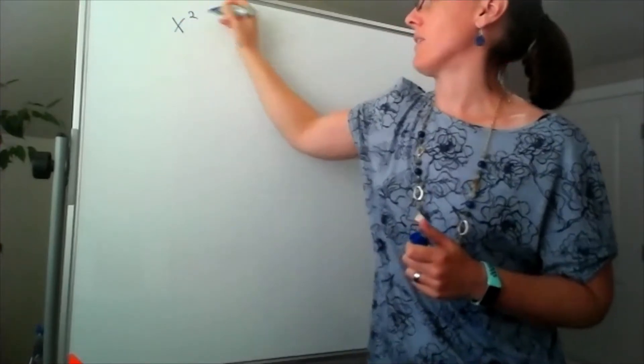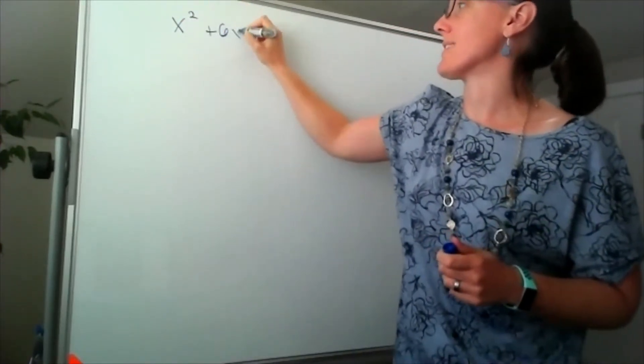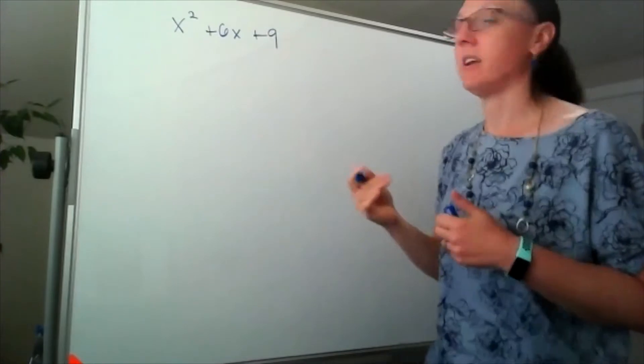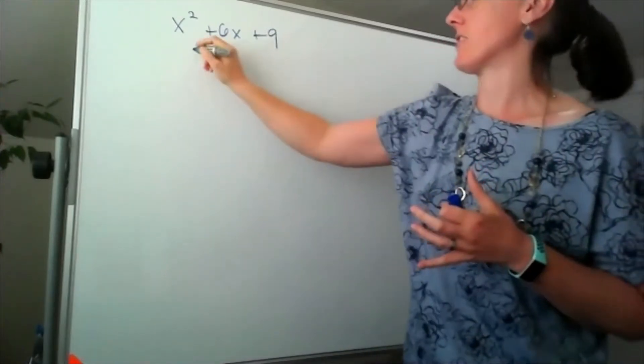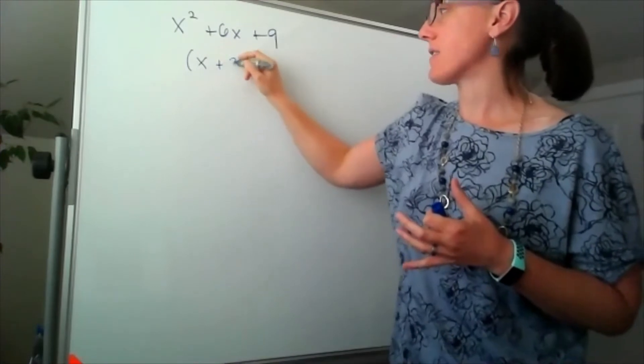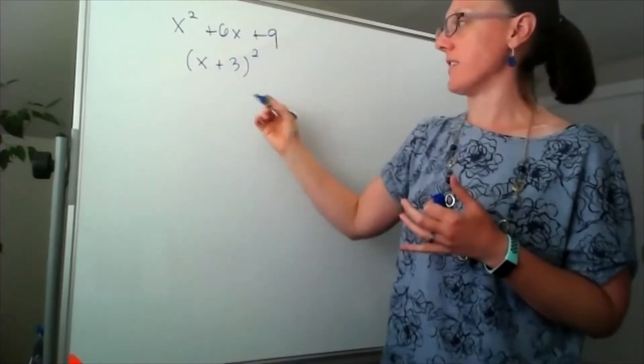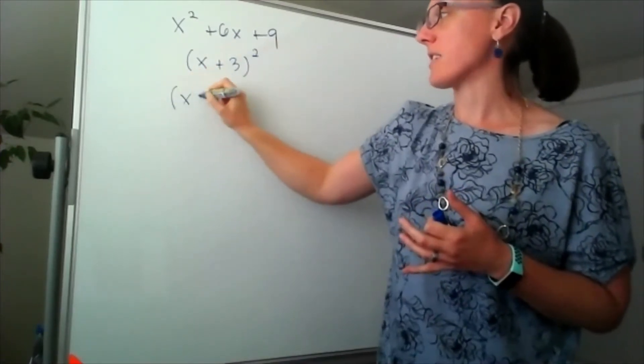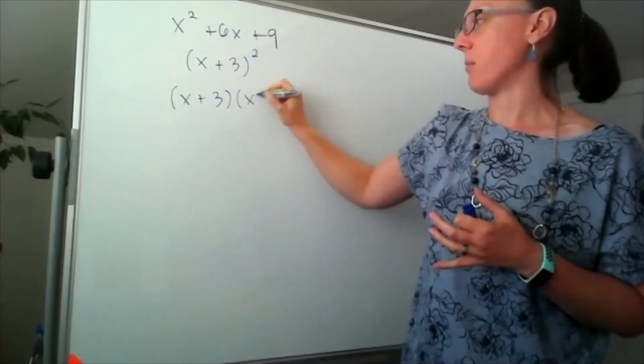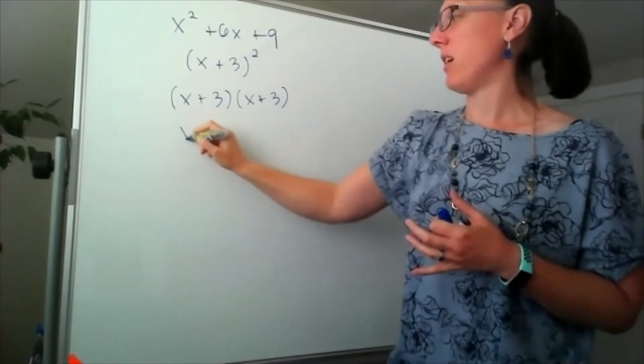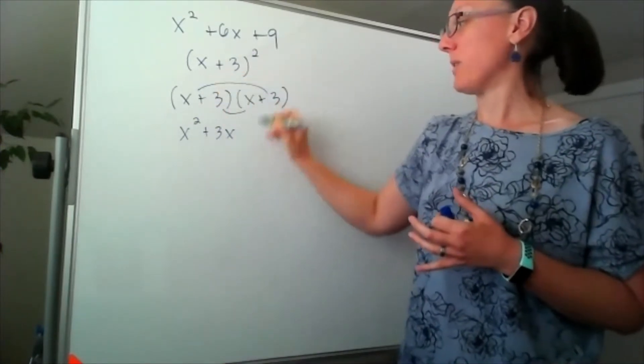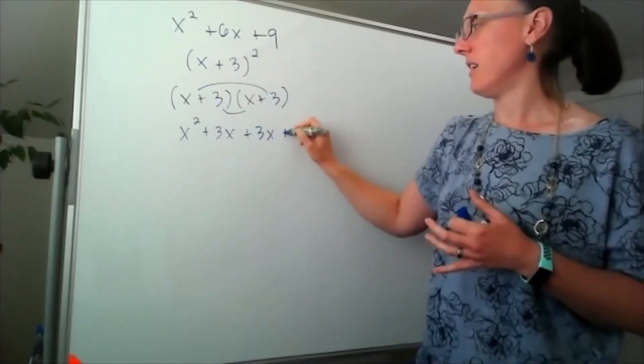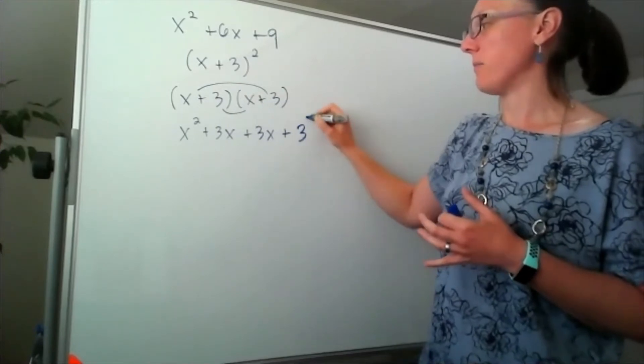So if I had something like x squared plus 6x plus 9, we say that this is a perfect square because it can be factored as x plus 3 quantity squared. And that works because when I take x plus 3 and multiply it by itself, I'll get x squared plus 3x plus another 3x plus 3 squared.